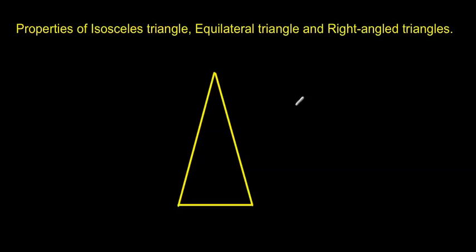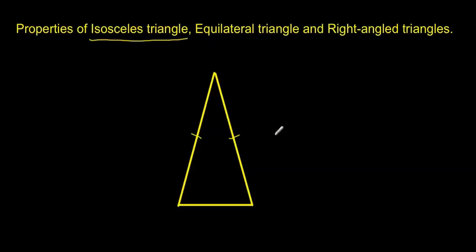The first triangle we're looking at here is an isosceles triangle. The properties of an isosceles triangle — that means the main features of an isosceles triangle — are not very difficult to understand. One of the first properties is that the opposite sides are equal, meaning the length of this side is the same as the length of this side.